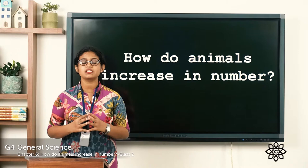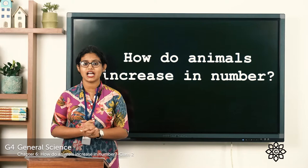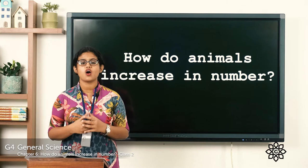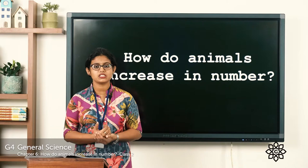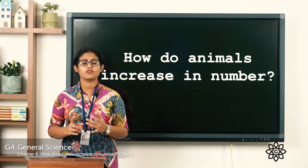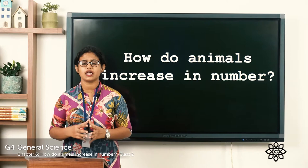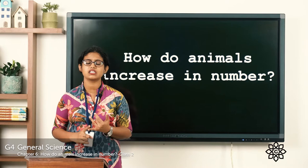Today we will be learning about the developmental stages of a butterfly and a frog. So what does 'life cycle' mean? Life cycle means the different stages of life, starting from the birth of a butterfly as well as a frog. There are some animals like frogs and insects like butterflies whose young ones do not directly hatch from eggs as adults.